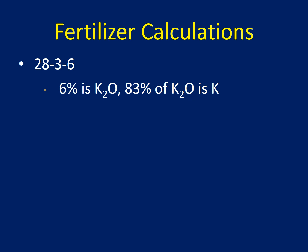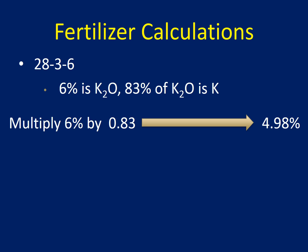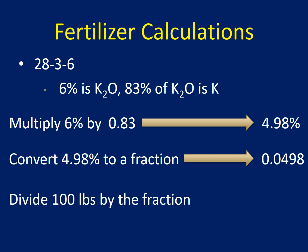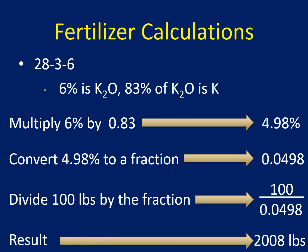For potassium: 6% of the fertilizer product is K2O, and we know that 83% of K2O is potassium. So we take the 6% and multiply it by 0.83, ending up with 4.98% — which represents how much potassium is actually in the product. We then convert 4.98 to a fraction, divide the hundred pounds we need by that fraction, and we get 2,008 pounds per acre.